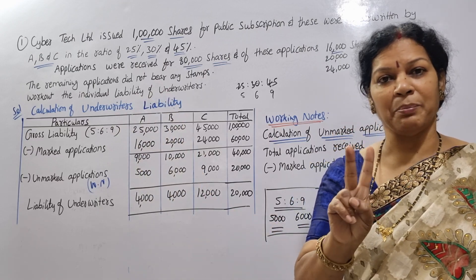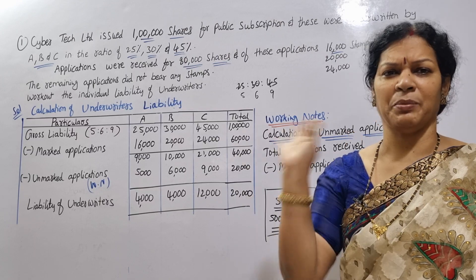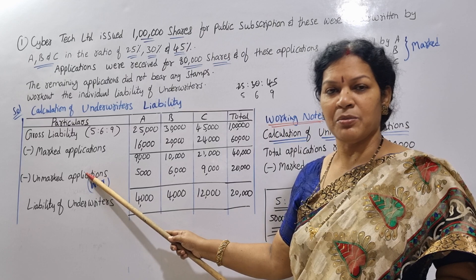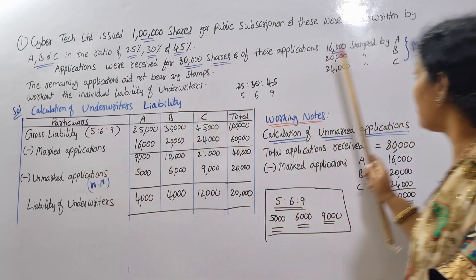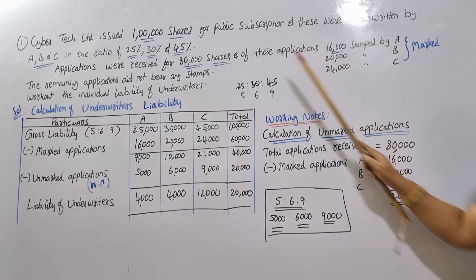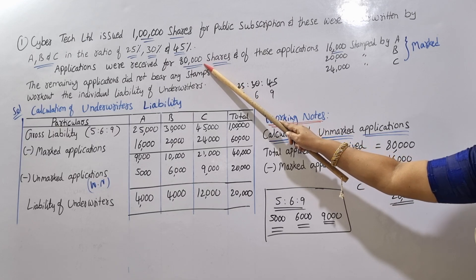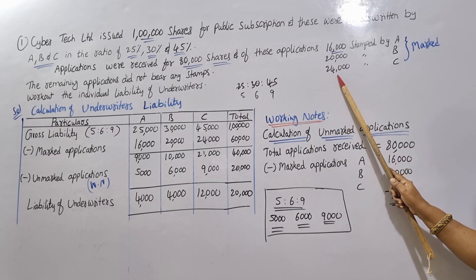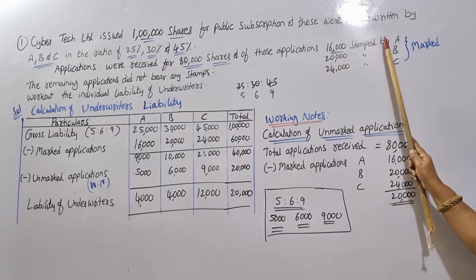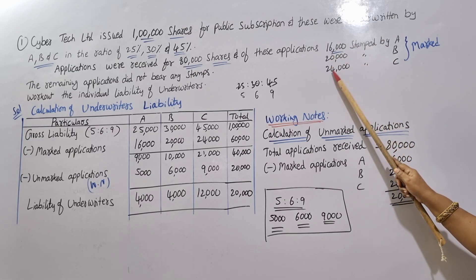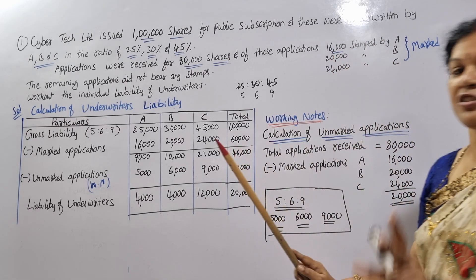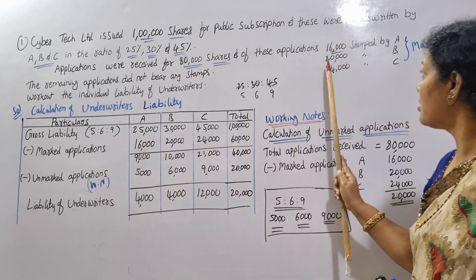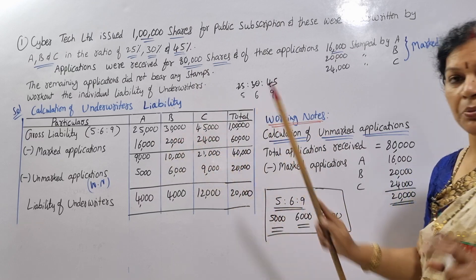Next, we deal with marked applications and unmarked applications separately. We take the gross liability and minus the marked applications. Marked applications: A received 16,000; B received 20,000; C received 24,000. Total marked applications are 60,000.